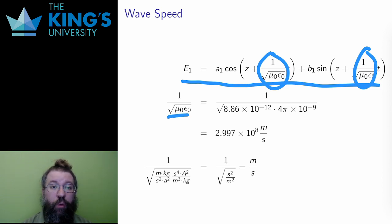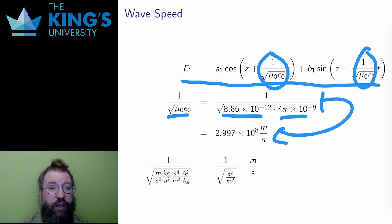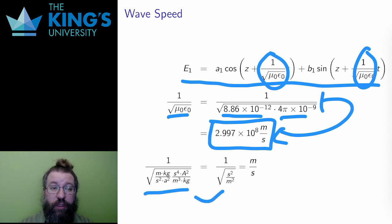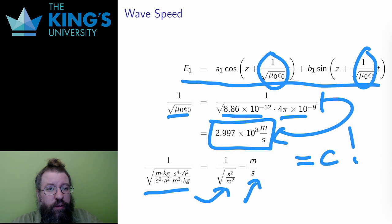1 over the square root of mu nought times epsilon nought. Remember, mu nought and epsilon nought were these two universal constants. These have values. 8.86 times 10 to the negative 12 and 4 pi times 10 to the negative 7. Well, so I can calculate this. And if I do that arithmetic, I get 2.997 times 10 to the 8. And if I went back to the units of all these constants, I would find that I do get units of meters per second. So this is indeed a velocity. This is a familiar number. This is c, the speed of light.